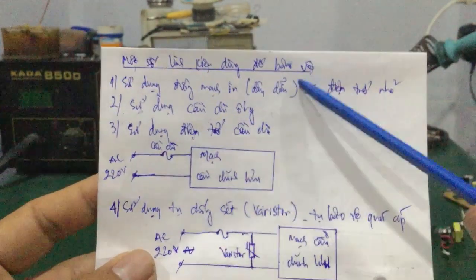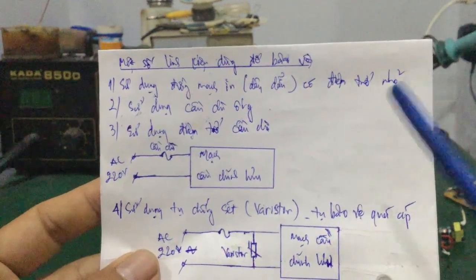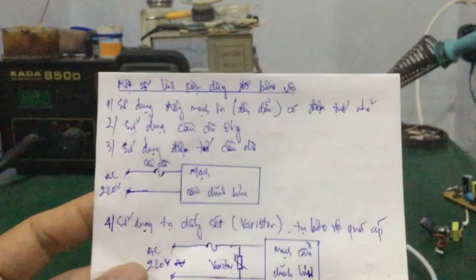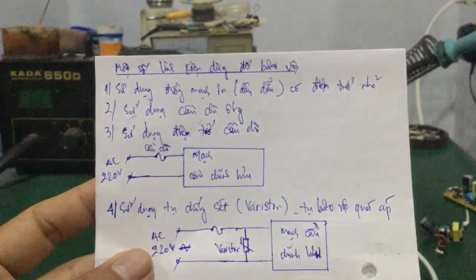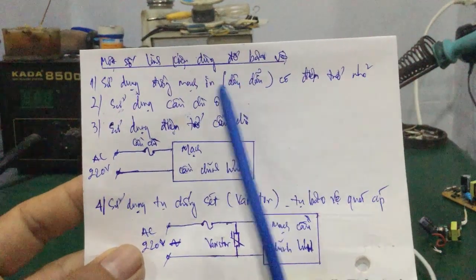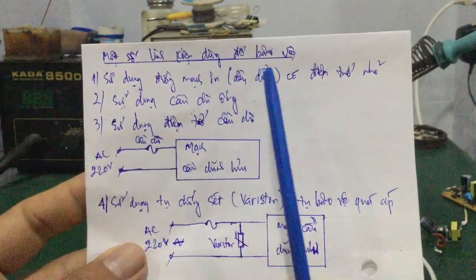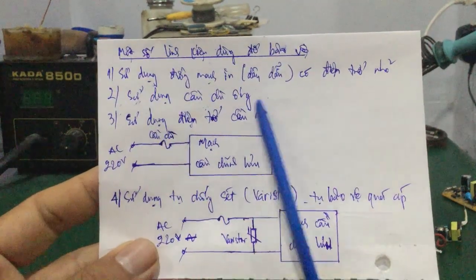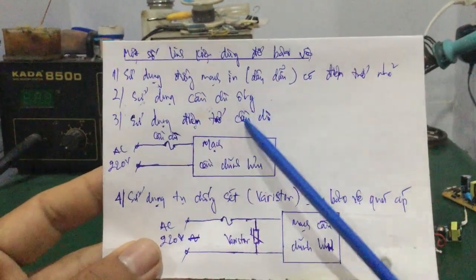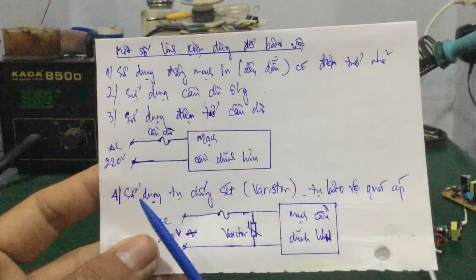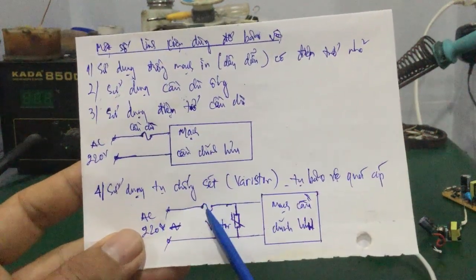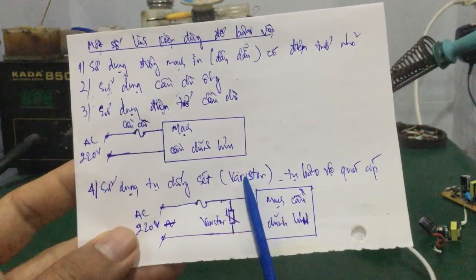Rồi là trên đây mình đã giới thiệu cho các bạn là bốn cái phần tử hoặc cái linh kiện dùng để bảo vệ trong cái mạch nguồn LED driver. Thứ nhất là nó sử dụng đường mạch in. Vấn đề thứ hai là nó sử dụng cầu chì ống. Và cách thứ ba nó sử dụng điện trở cầu chì. Thì cái cầu chì ống và cái điện trở cầu chì này tương tự nhau. Và thứ tư, nó sử dụng một cái tụ chống sét mà varistor này, kết hợp với con cầu chì hoặc cái con điện trở cầu chì, để mà bảo vệ cầu chỉnh lưu phía sau.